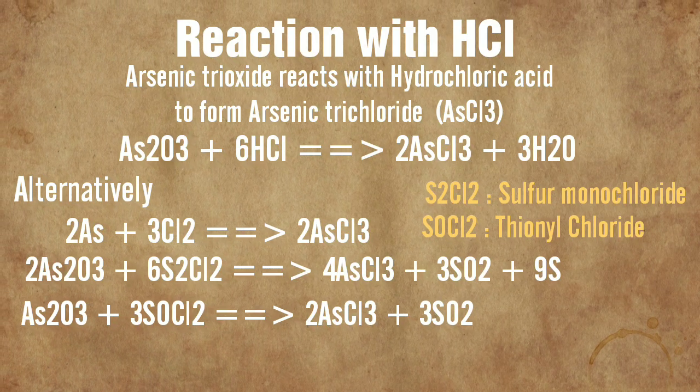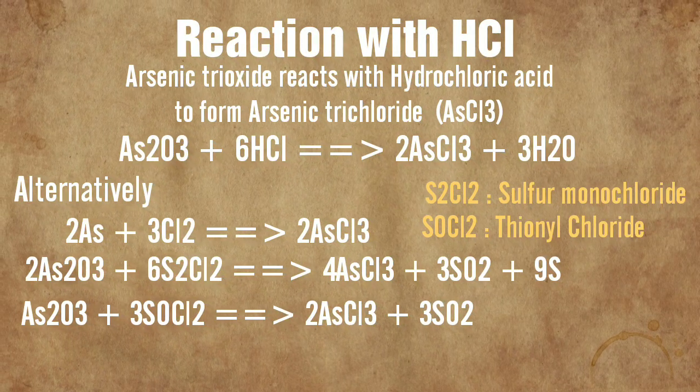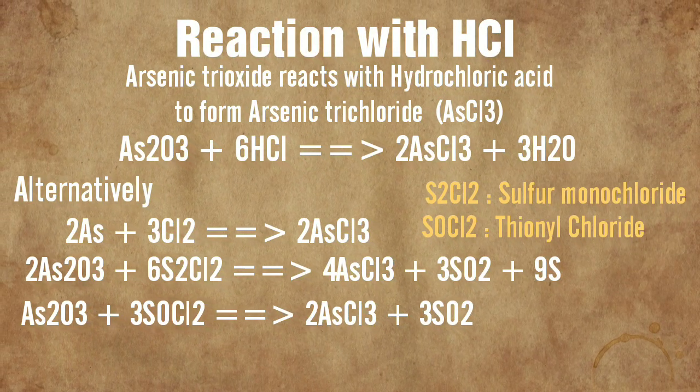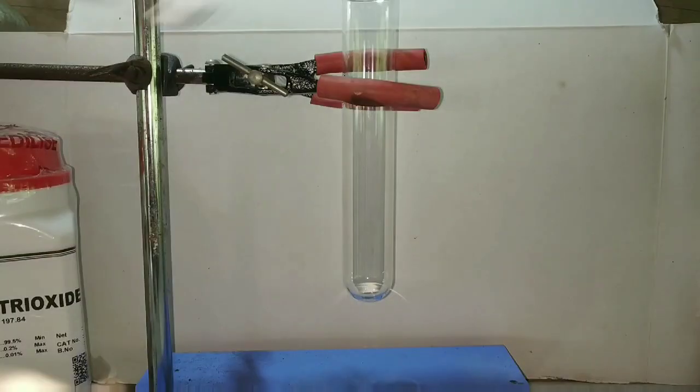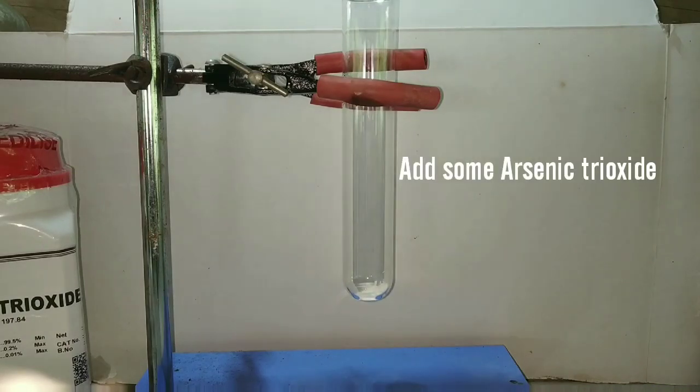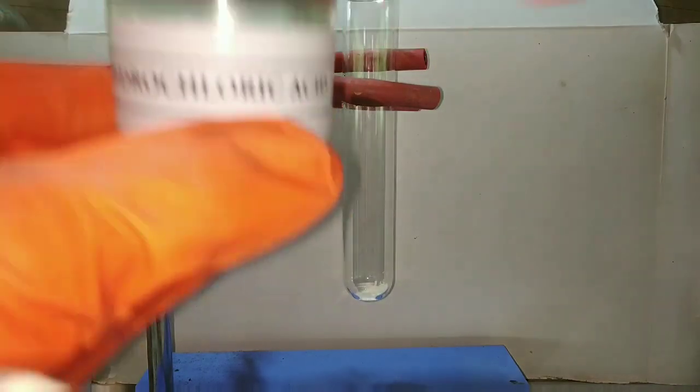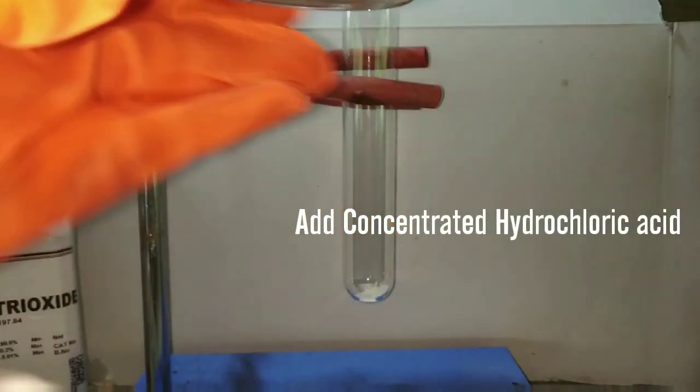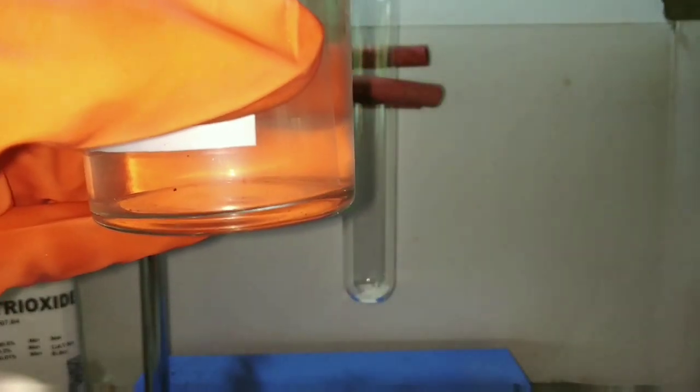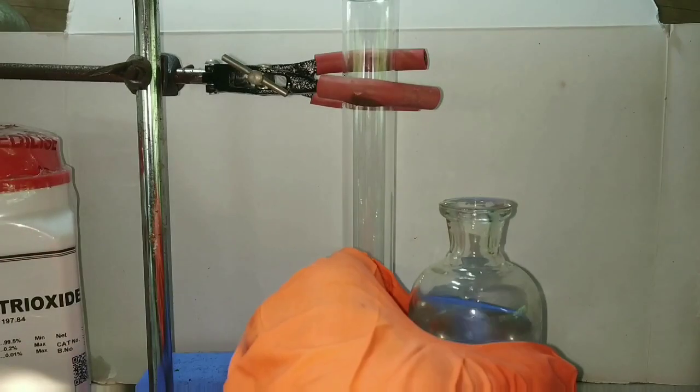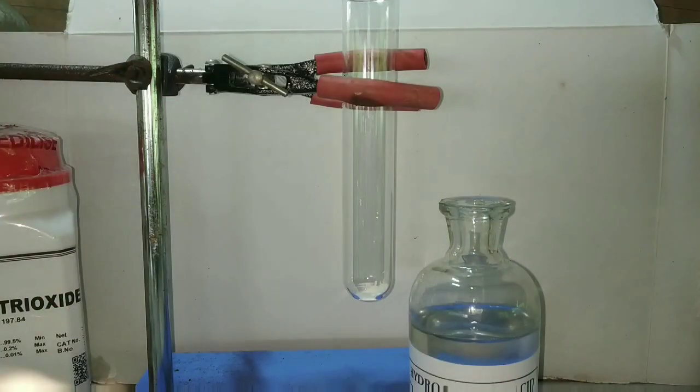Now we will see the reaction of arsenic trioxide with concentrated hydrochloric acid. It forms arsenic trichloride. Alternative methods are given below. First of all we take the compound in the test tube. The next step is to add the concentrated hydrochloric acid. As I always say, we add the concentrated acid with the help of a dropper, not direct addition.